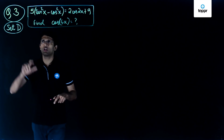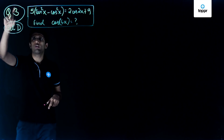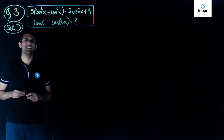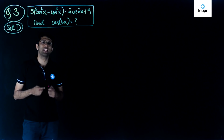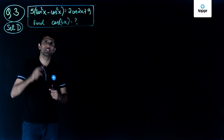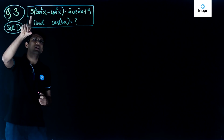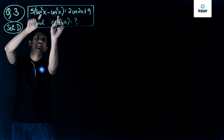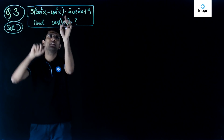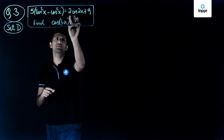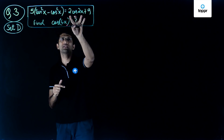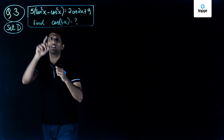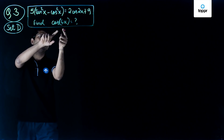We will now solve question number 3 of set B of the IIT JEE Mains 2017 paper. We have been given the equation that 5 times tan squared x minus cos squared x is equal to 2 times cos of 2x plus 9, and we have to find the value of cos of 4x.